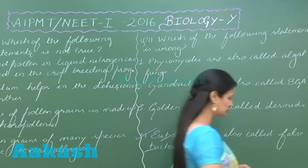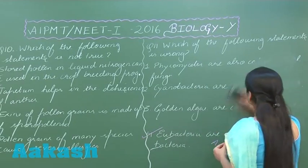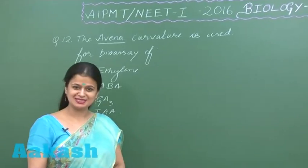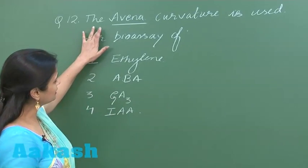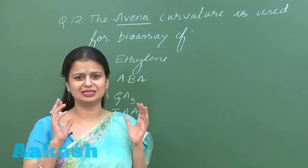Now question number 12. This question had come in All India PMT several times. It is related to hormones. The avena curvature test is used for bioassay of auxin.